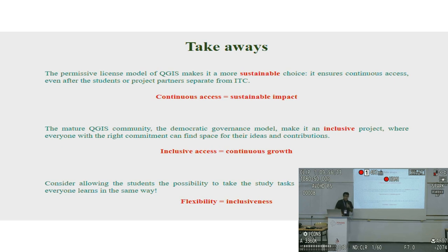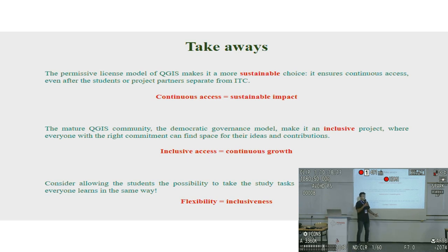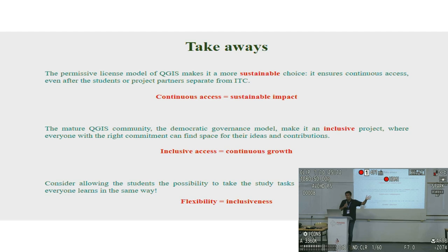So, what are the main takeaways? Why do we call it 'towards a sustainable and inclusive education'? First, because if you use open source software, you have a license model that is very inclusive in the sense that the entry barriers are very low — anyone can use it. If you ensure continuous access, you are also ensuring a sustainable impact, that more work can be created if the student chooses this path of GIS and spatial analysis.